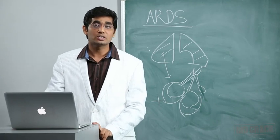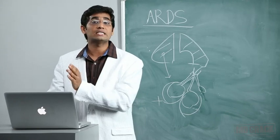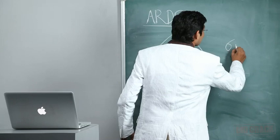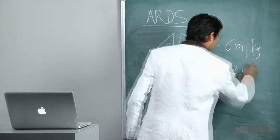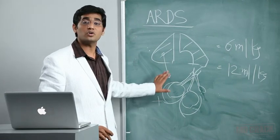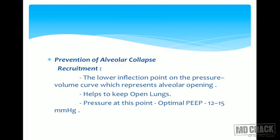What should be our tidal volume for these patients? It should not be more than 6 ml per kg of body weight, compared to the normal conventional 10 to 12 ml per kg. This prevents overdistention of normal alveoli.